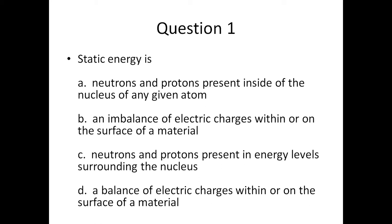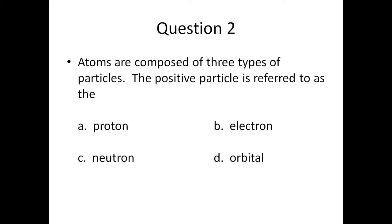Question one: static energy is — A) neutrons and protons present inside of the nucleus of any given atom, B) an imbalance of electric charges within or on the surface of a material, C) neutrons and protons present in energy levels surrounding the nucleus, or D) a balance of electric charges within or on the surface of a material.